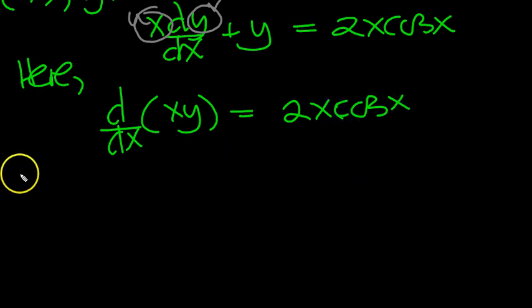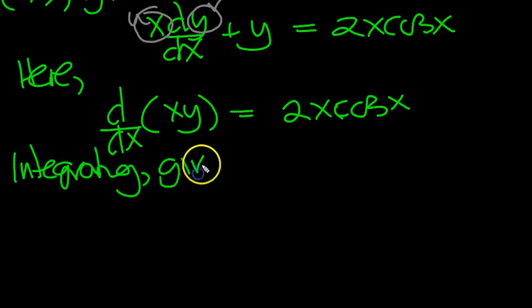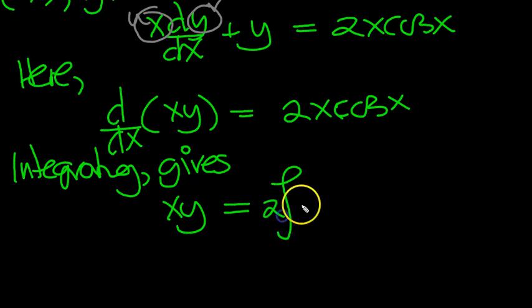2x cos(x). Integrating both sides gives the integral of the derivative on the left-hand side is just the thing itself inside the bracket, xy. And then we've got 2 lots of integral of x cos(x) dx, which is integration by parts.